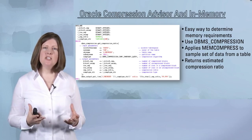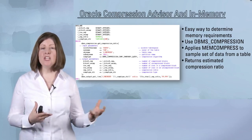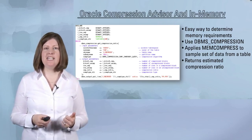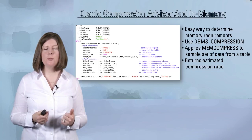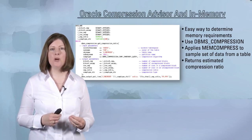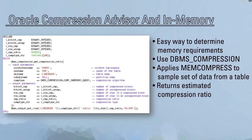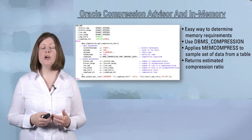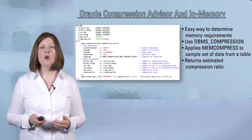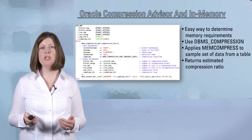Now you know how to get data into the column store and how to size it, but how much space do you really need? How well are your particular objects going to compress when you run MEMCOMPRESS on them? You can find out by running the Compression Advisor. The Compression Advisor has been extended in Oracle Database 12c to be MEMCOMPRESS aware, so you'll be able to run it by calling DBMS_COMPRESSION and specifying the new MEMCOMPRESS attributes to find out what compression ratio you can expect for your objects should they be populated into the in-memory column store.